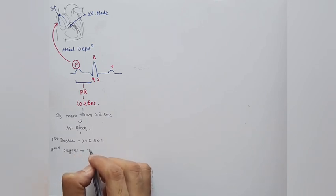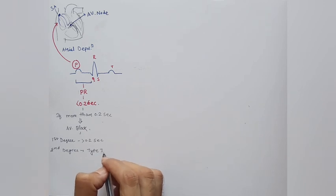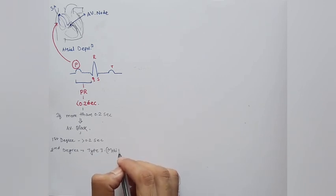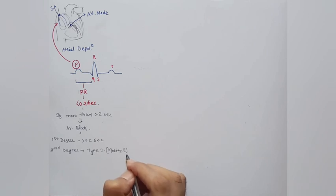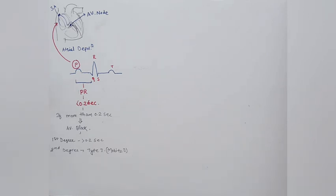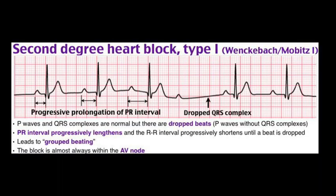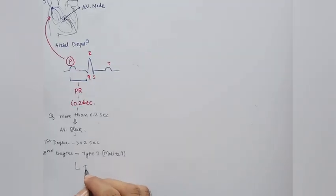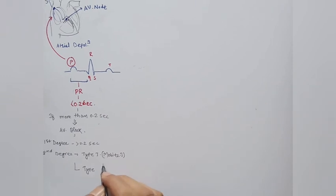Second degree heart block has two types: Type 1 and Type 2. Type 1 is also called Mobitz Type 1 or Wenckebach heart block. In Wenckebach heart block, we can see progressive lengthening of the PR interval and then a sudden drop of the QRS complex — a dropped beat.